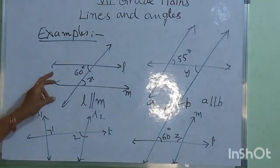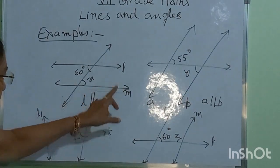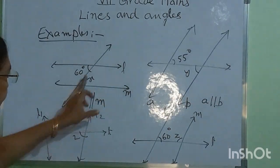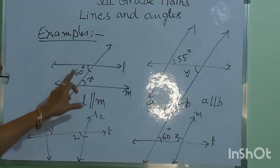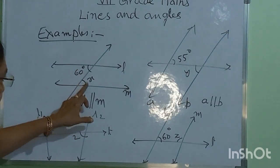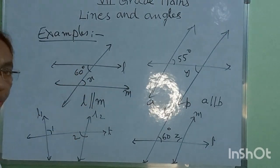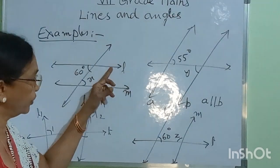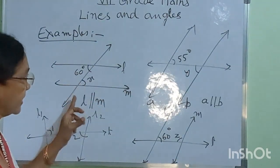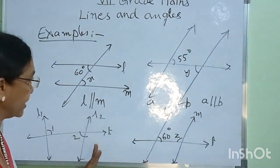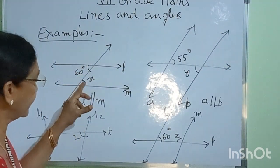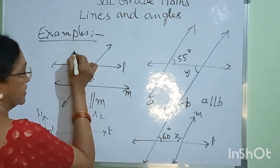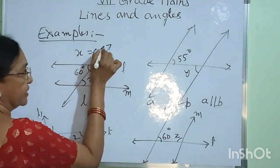Here, L and M are two parallel lines. L is parallel to M, and this is a transversal. So 60 degrees and X are alternate interior angles. Therefore, when two parallel lines are intersected by a transversal, the alternate interior angles are equal. Therefore, X is equal to 60 degrees.